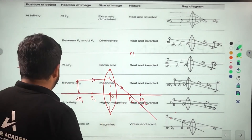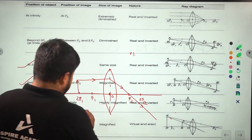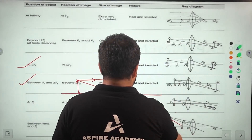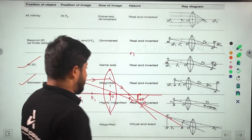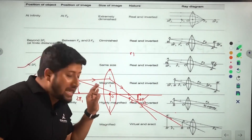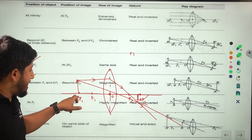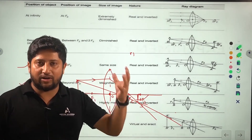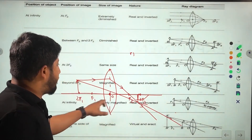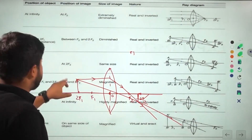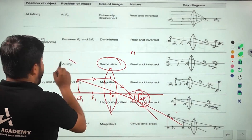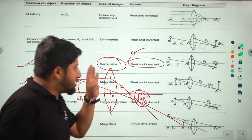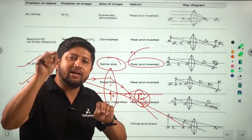When the object is placed at twice f1, the image forms at twice f2. In a lens, we call the center of curvature positions as 2f1 and 2f2. The conclusion: the image is the same size as the object, real and inverted, formed at twice f2.